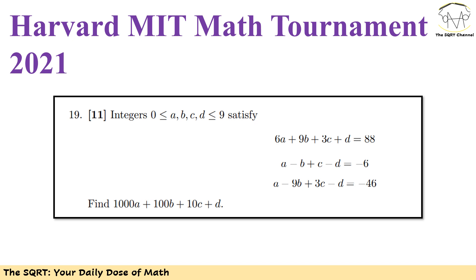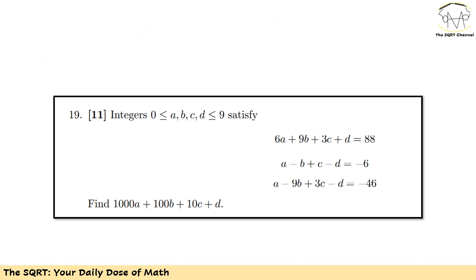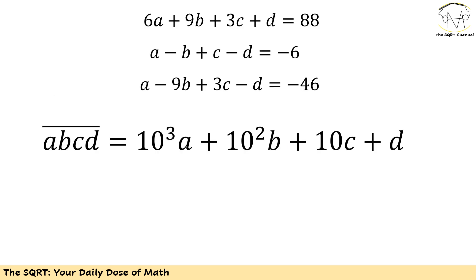Let's take another look at the problem because there is something interesting here. What we are going to find is 1000 times a plus 100 times b plus 10 times c plus d. Basically we are going to treat a, b, c, and d as digits of a four-digit number and we want to find that number. To solve this I'm going to start by using a, b, c, d as the digits of a four-digit number as we discussed.